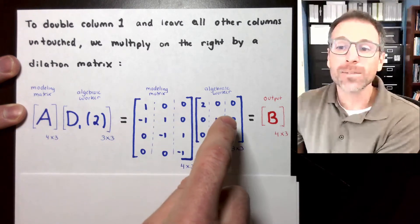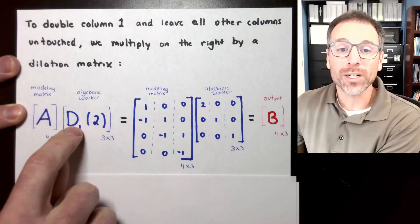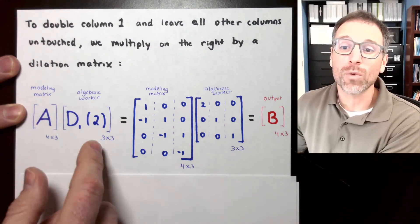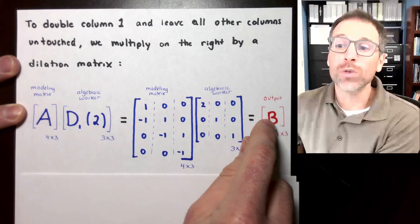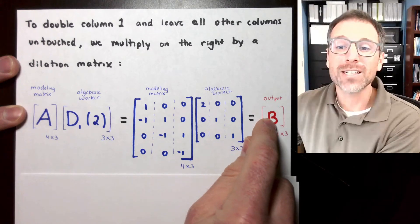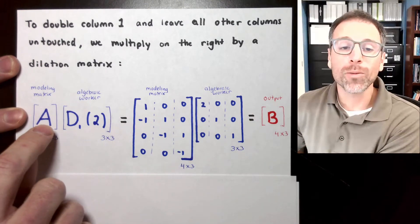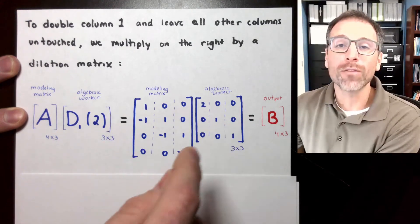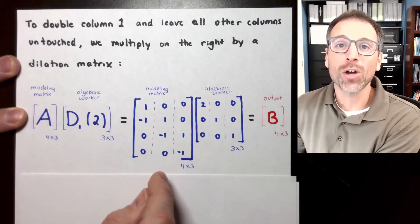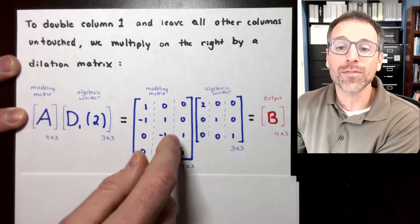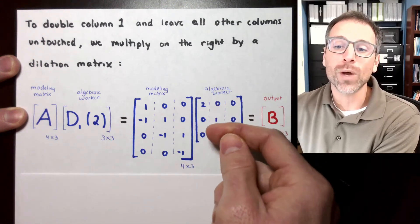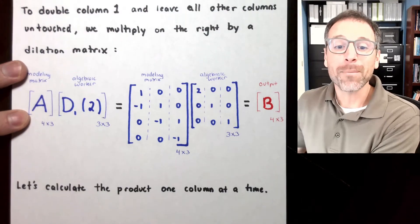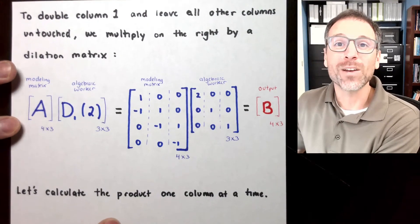Here is our modeling matrix. This is our dilation matrix. To recall that, you can go back and watch those videos. Then what we're going to do is calculate the output matrix B. Notice that since we're multiplying A on the right by an algebraic worker, we chop all of this into columns and then take linear combinations of the columns of A with individual entries coming from the columns of our right-hand side matrix.